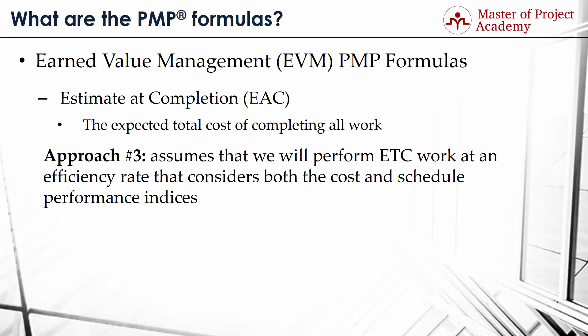Approach 3 assumes that ETC work will be performed at an efficiency rate that considers both the cost and schedule performance indices. Accordingly, its formula is: EAC equals the result of BAC minus EV, divided by the result of CPI times SPI, all plus AC.